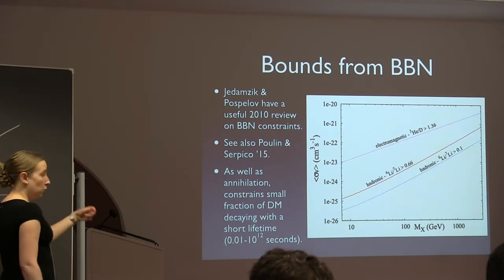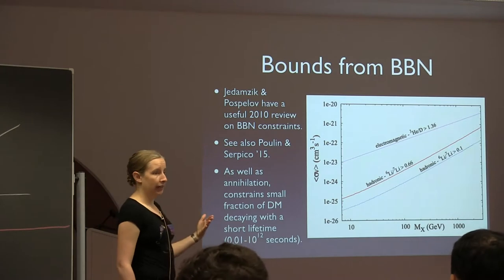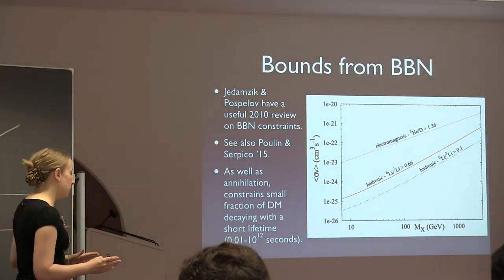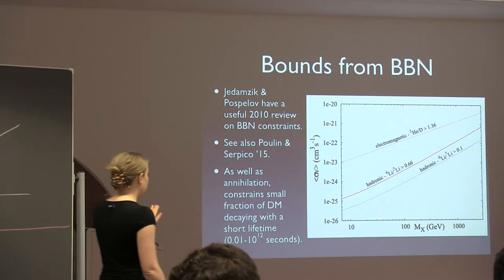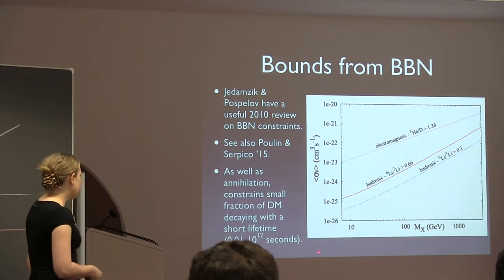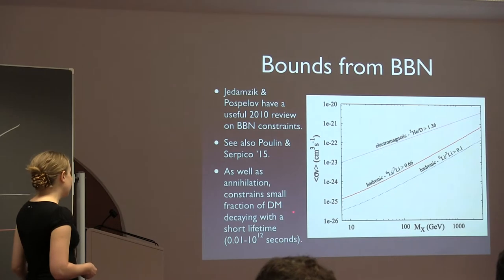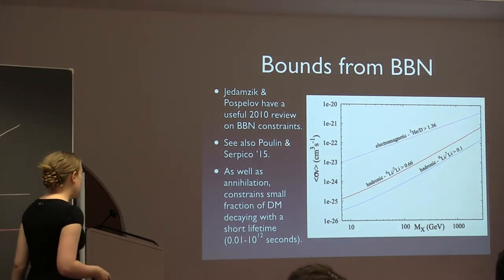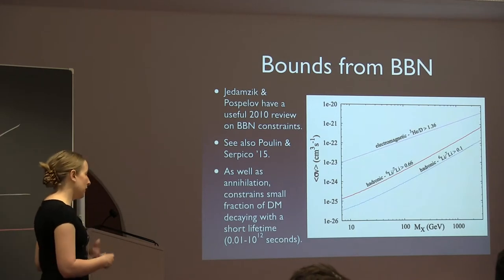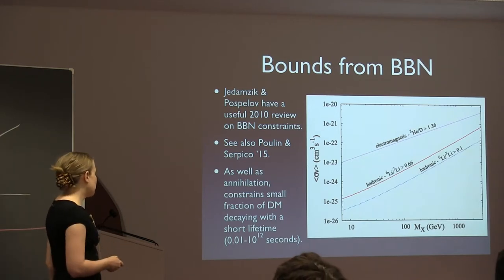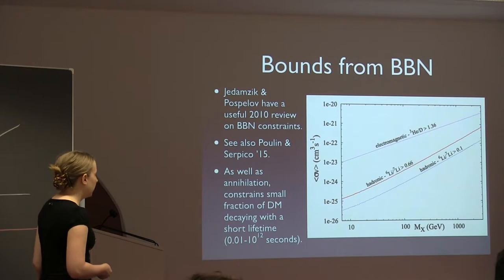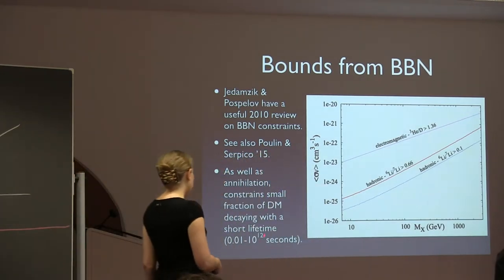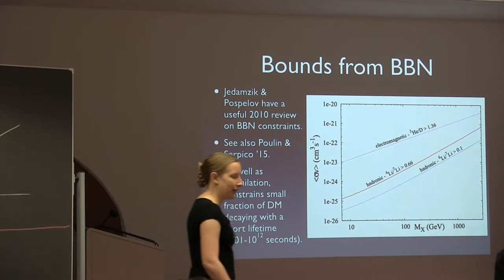If there was some small fraction of dark matter that decayed early with a short lifetime — not the dark matter we see today, but an early metastable species — BBN can set limits on decays with lifetimes between 0.01 and 10^12 seconds. BBN is really the only way to probe such short lifetimes short of laboratory experiments.